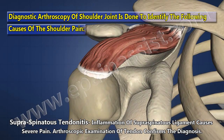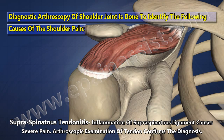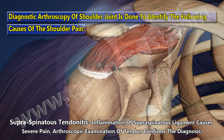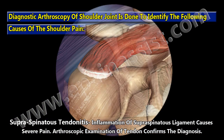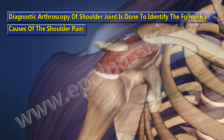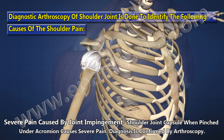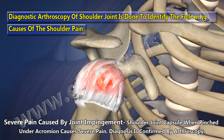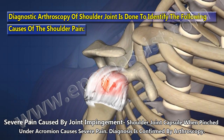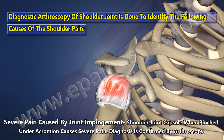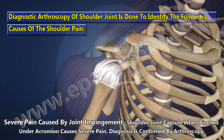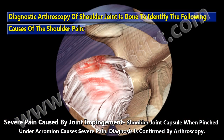Supraspinatus tendonitis — inflammation of the supraspinatus tendon — causes severe pain. Arthroscopic examination of the tendon confirms the diagnosis. Severe pain can also be caused by joint impingement: when the shoulder joint capsule is pinched under the acromion, it causes severe pain, and this diagnosis is confirmed by arthroscopy.